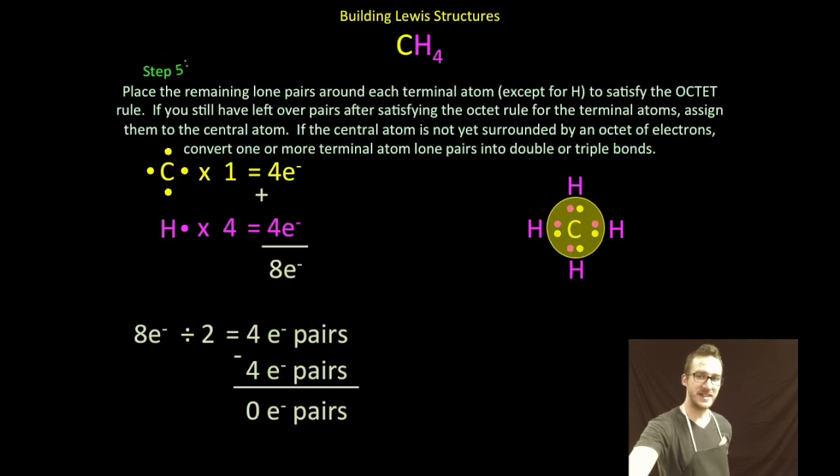In this case, as I take a look at my Lewis structure, I recognize that carbon has an octet. By sharing its four valence electrons, one with each of the hydrogens, it completes its octet.